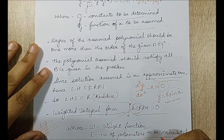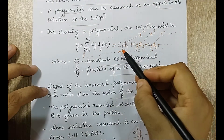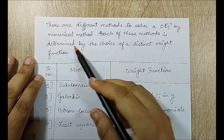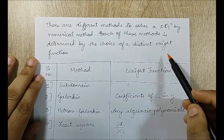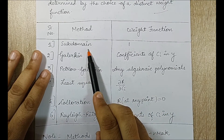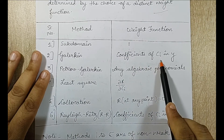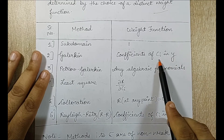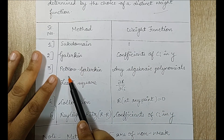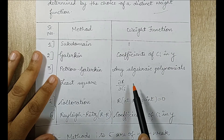There are different methods to solve a differential equation by numerical method, each determined by a distinct choice of weight function. In the subdomain method, the weight function is assumed as 1. In Galerkin's method, the weight function is taken as the coefficient of c_i in y — for example, x squared, x cubed, or x minus 1. In the Petrov-Galerkin method, any algebraic polynomial such as x squared or x cubed is assumed as the weight function.